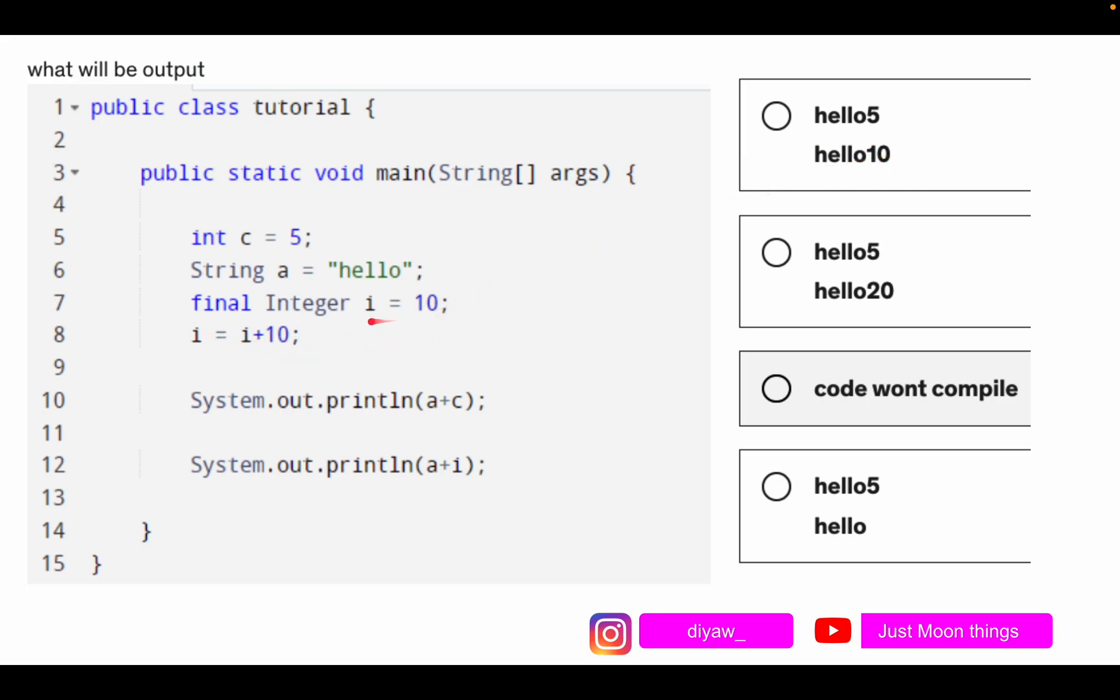That means statement a did nothing and the integer value is 10. Then we have hello5 and hello20, that means this thing worked and 10 plus 10, and the i was reassigned the value 20. The third option says that the code won't compile.